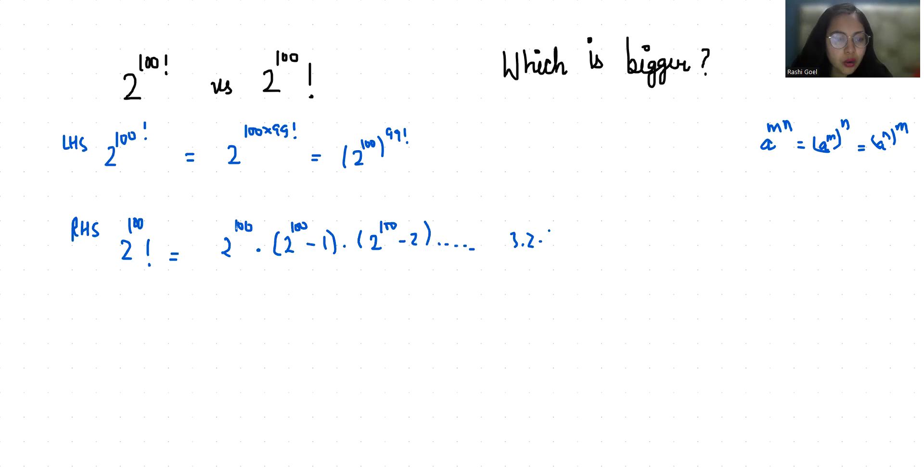Now I'm solving RHS. 2^100 we can take common from every term, so 2^100 × 2^100 × 2^100 till n times. Overall this gives us (2^100)^(2^100).